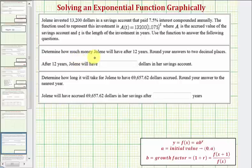Our first question, we want to determine how much money Jolene will have after 12 years, and we're asked to round to two decimal places, or to the nearest cent. So let's do this on the calculator, and because we're going to be solving the second part graphically, let's go ahead and enter the entire function in Y1.